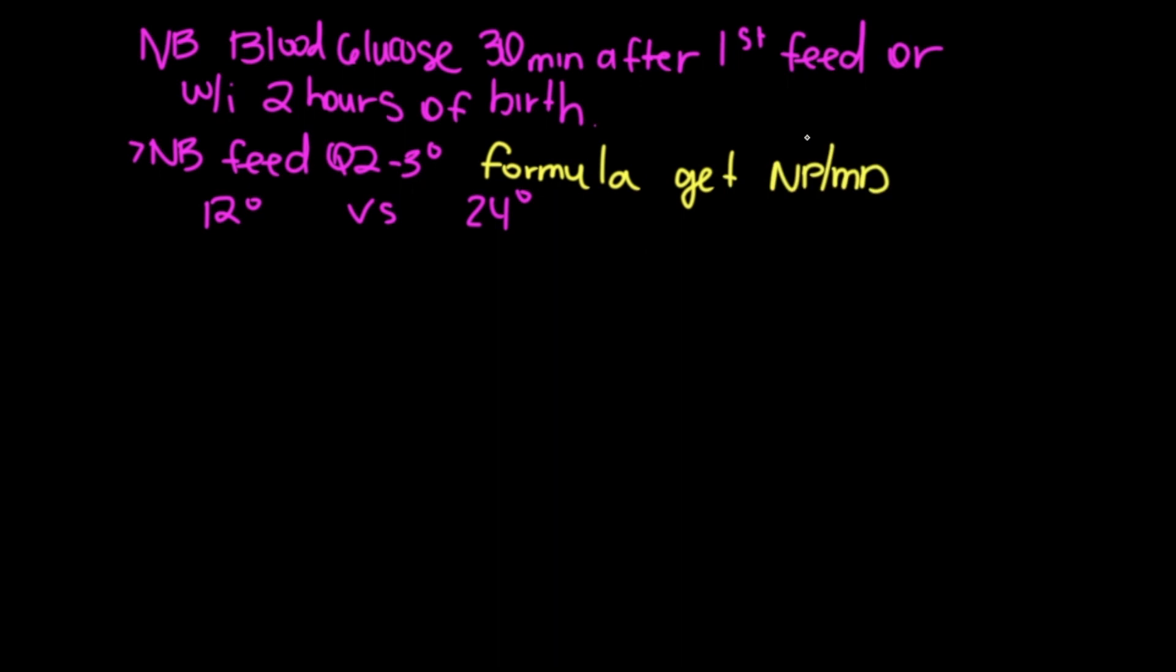So babies that fall under the 12-hour versus the 24-hour blood glucose checks, it varies based off of IDM. So babies that are infants of diabetic mothers, their blood glucose will be checked for the first 12 hours of birth. Or your large for gestational age, their blood glucose will be checked for 12 hours in duration.